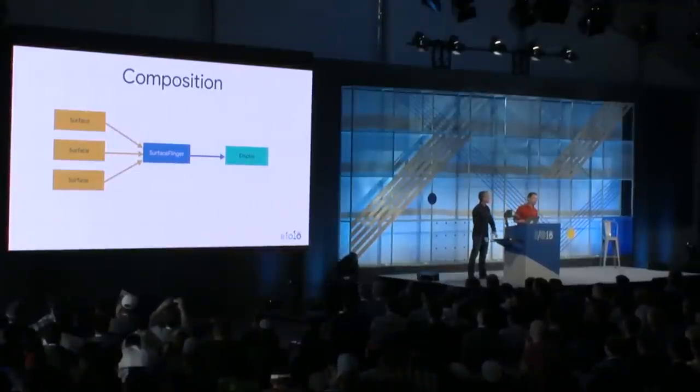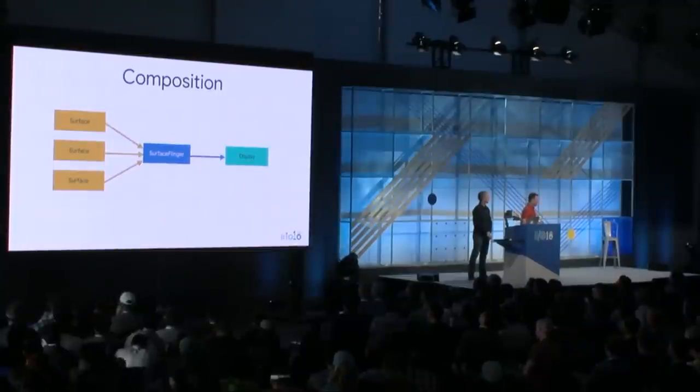Now we'll talk about how SurfaceFlinger composites all windows on screen. This helps you understand the concepts behind public APIs like Surface, SurfaceTexture, SurfaceView, and MediaCodec. First, we need to understand the buffer queue: a queue of graphics buffers, typically one, two, or three buffers. A buffer queue has two endpoints — the producer and the consumer. The producer calls dequeueBuffer to grab a buffer, does any kind of rendering (sending pixel data directly, using OpenGL, using Canvas), and when done, calls queueBuffer to give the buffer back. The consumer calls acquireBuffer to take the next available buffer, does whatever it needs, and calls release when done.